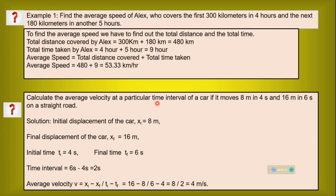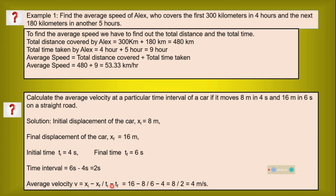Calculate the average velocity of a car over a particular time interval if it moves 8 meters in 4 seconds and 16 meters in 6 seconds on a straight road. Initial displacement is 8 meters and final displacement is 16 meters. Displacement equals final minus initial: 16 minus 8 equals 8 meters. Time taken is 6 minus 4 equals 2 seconds. Average velocity equals displacement divided by time: 8 divided by 2 equals 4 meters per second.